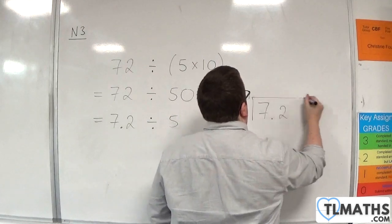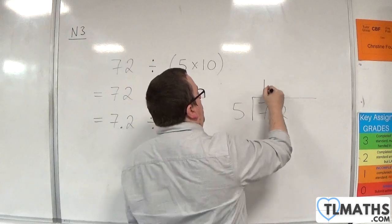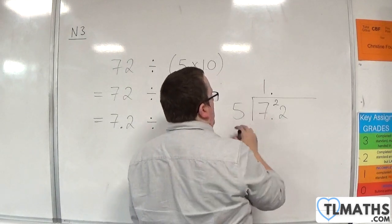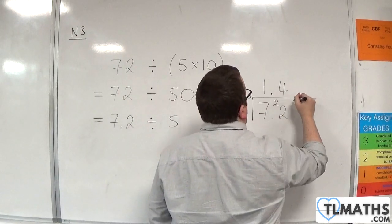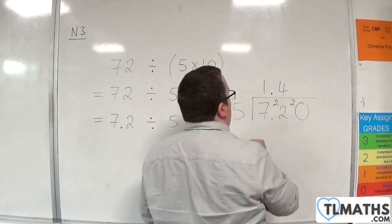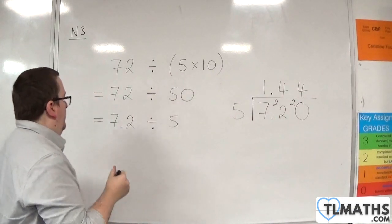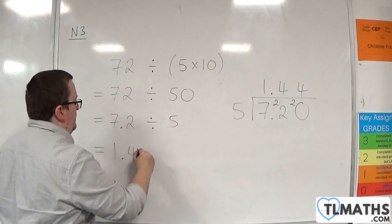7.2 divided by 5. 5s into 7 go once with 2 left over. Bring up the decimal point. 5s into 22 go 4. With 2 left over, let's bring the 0. 5s into 20 go 4. So, 7.2 divided by 5 is 1.44.